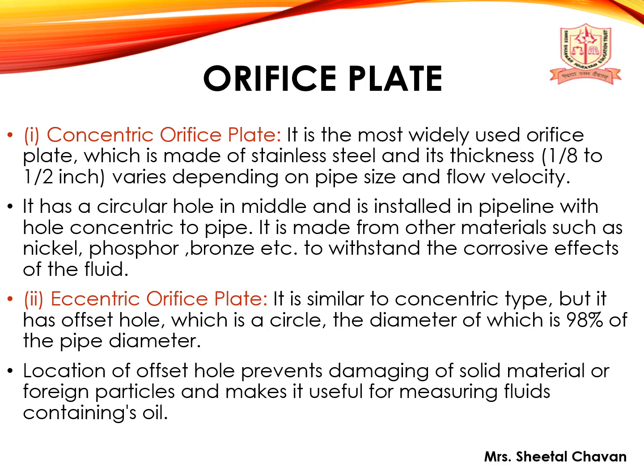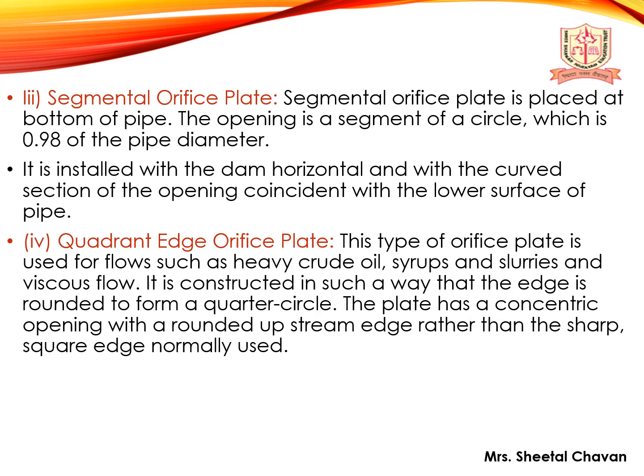The second is the eccentric orifice plate, similar to the concentric type but with an offset hole whose diameter is 98% of the pipe diameter. The offset hole prevents damage from solid or foreign particles and makes it useful for measuring fluids containing oils. The third is the segmental orifice plate, placed at the bottom of the pipe. The opening is a segment of a circle with a diameter 0.98 of the pipe diameter, installed with the curved section coincident with the lower surface of the pipe.